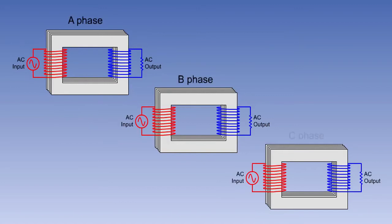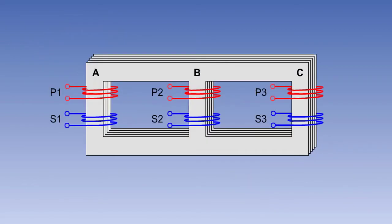The output of a three-phase AC generator can be transformed by using either three single-phase transformers or a three-phase transformer, which consists of a laminated core with three limbs on which are wound the three sets of primary and secondary windings.